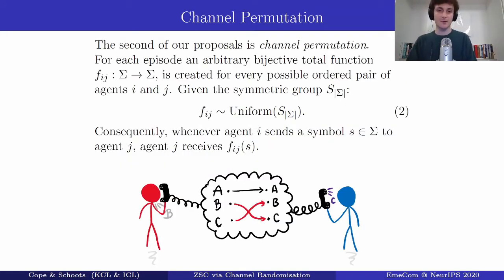Now our second proposal is channel permutation. For each episode with this setup a mapping is created by sampling from the symmetric group over communication symbols.